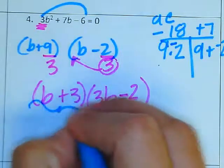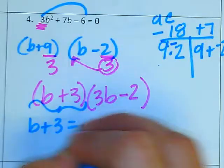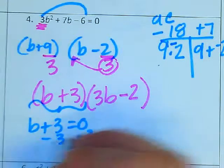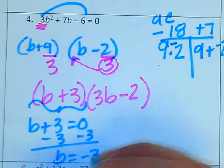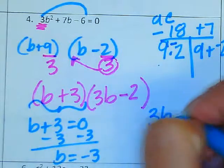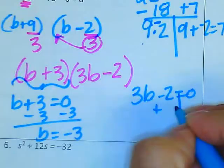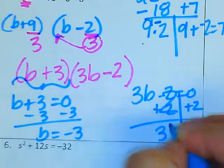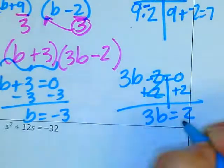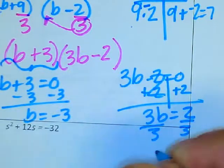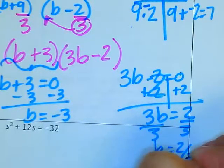Once I have that, I'm going to set each to 0. And I would get B equals negative 3. And here I'm going to have two steps, so plus 2 plus 2. 3B equals 2, and then divide it by 3. So it would be 2 thirds.